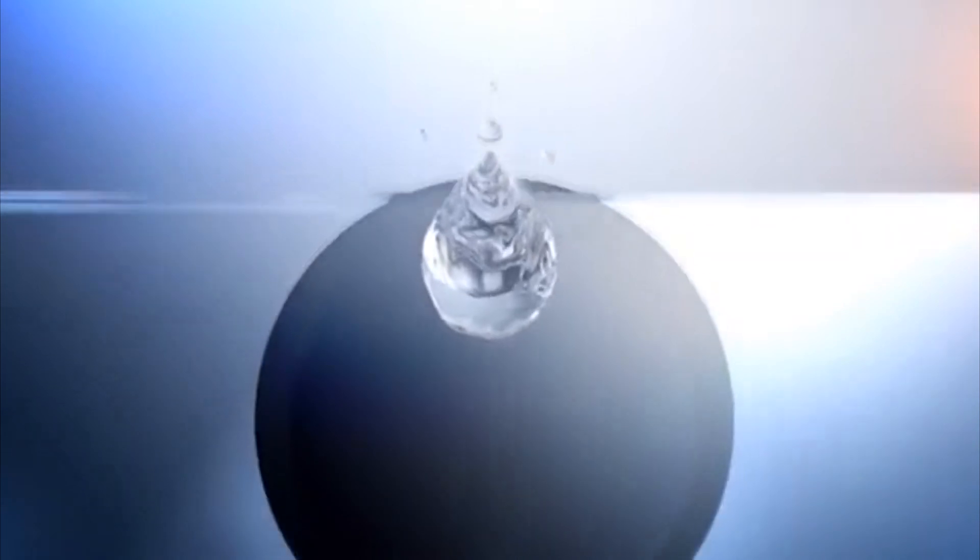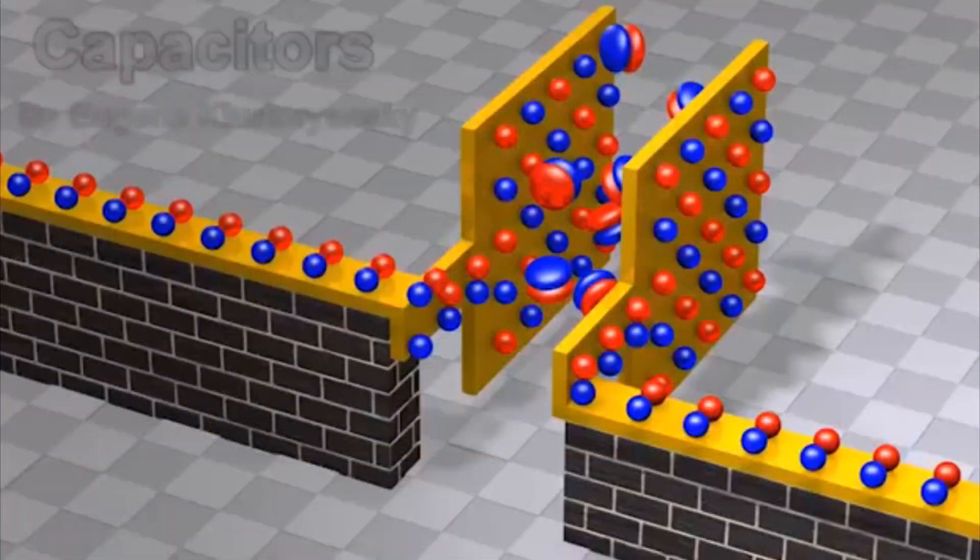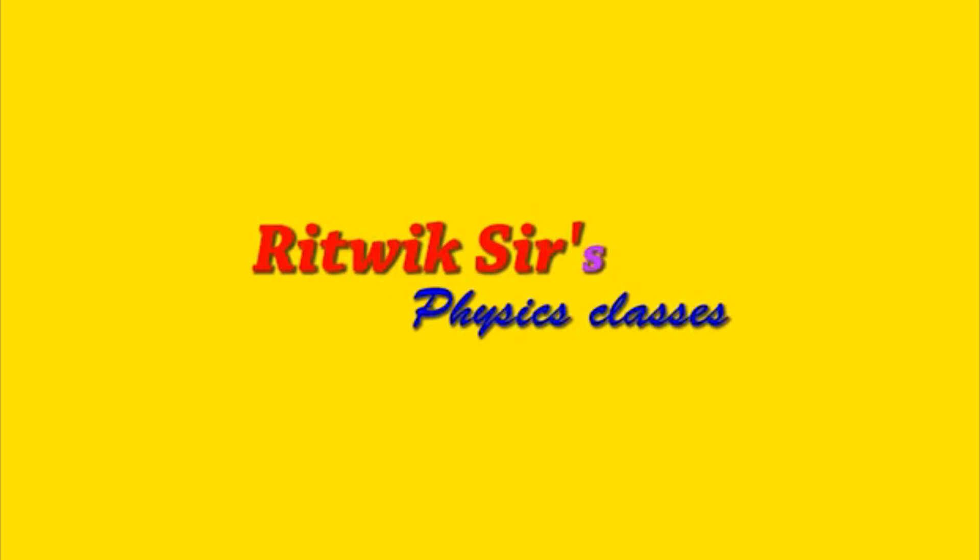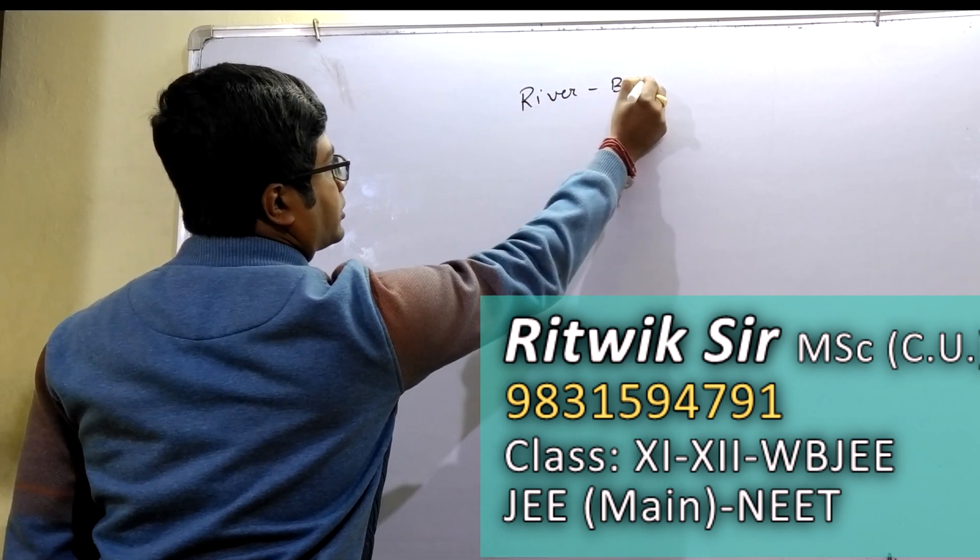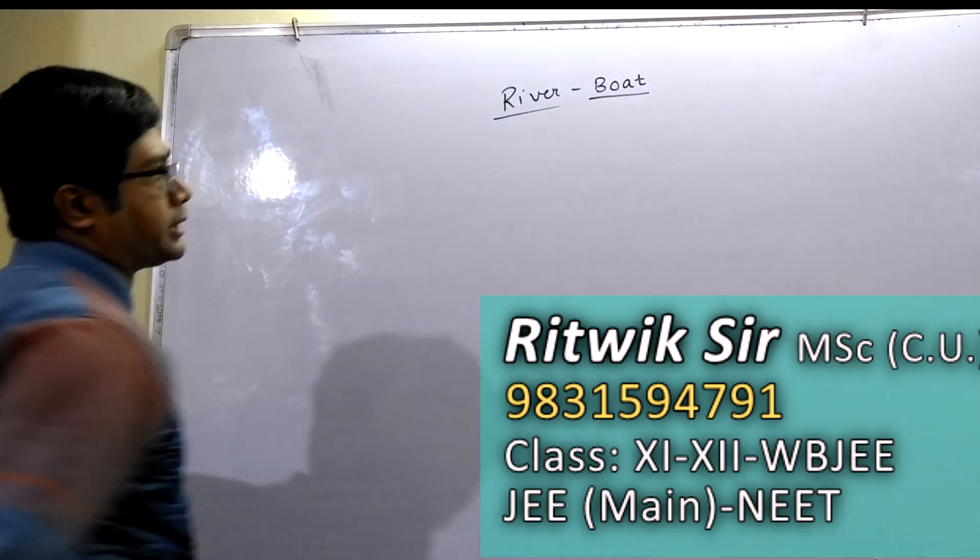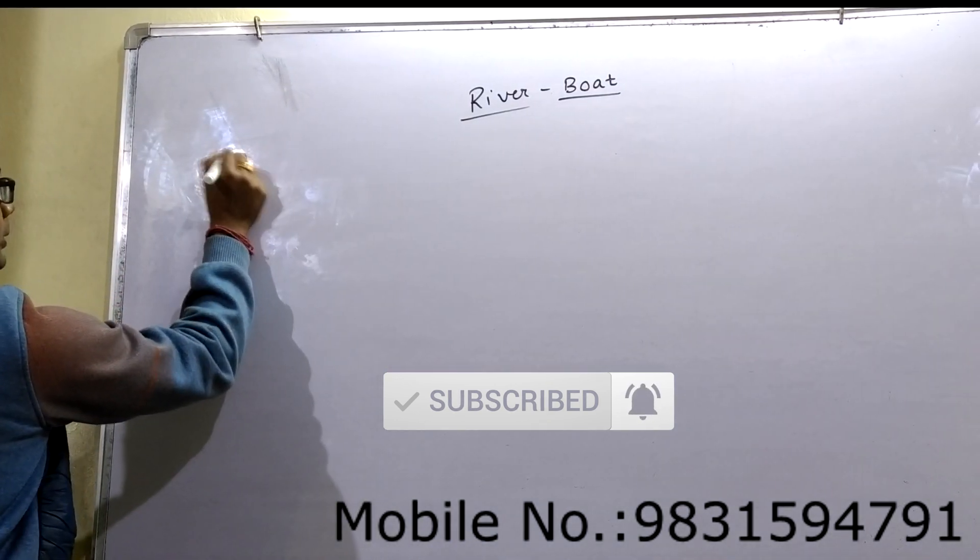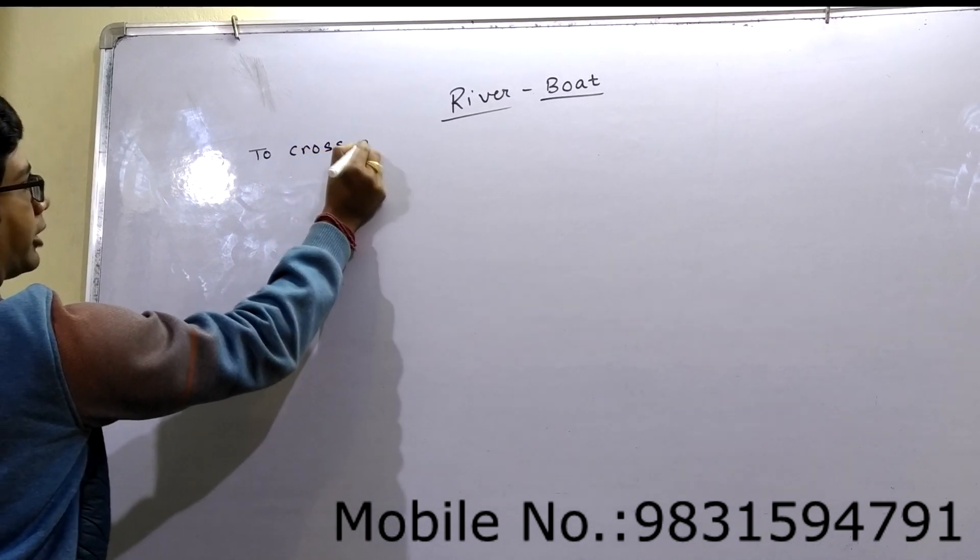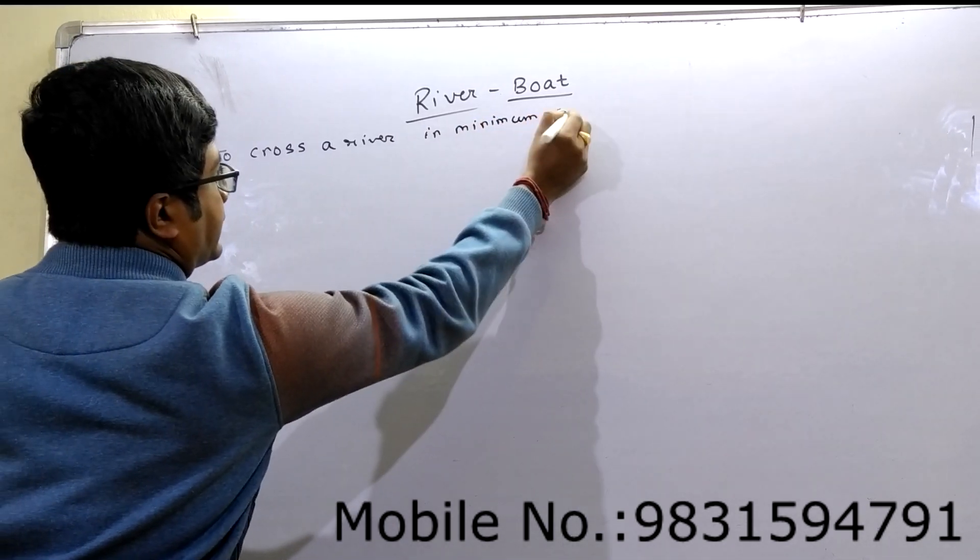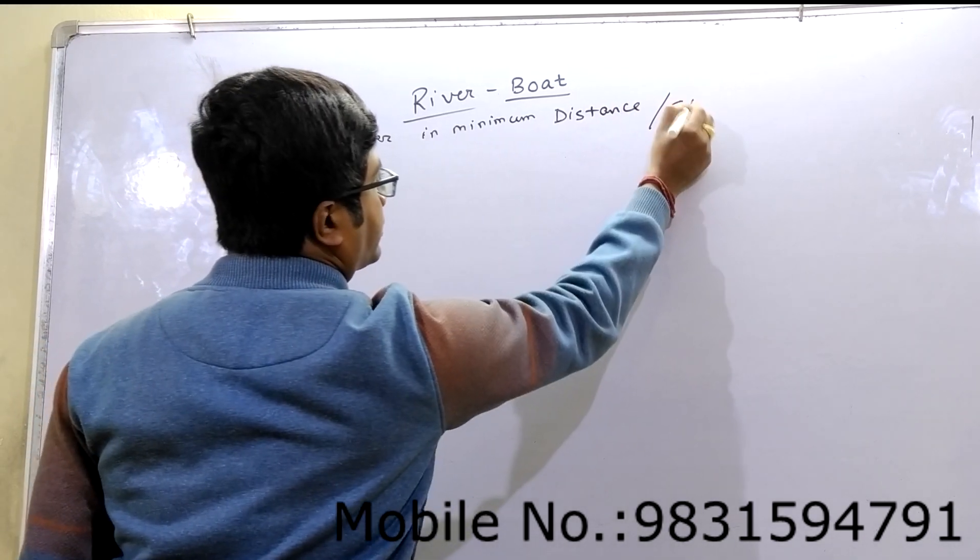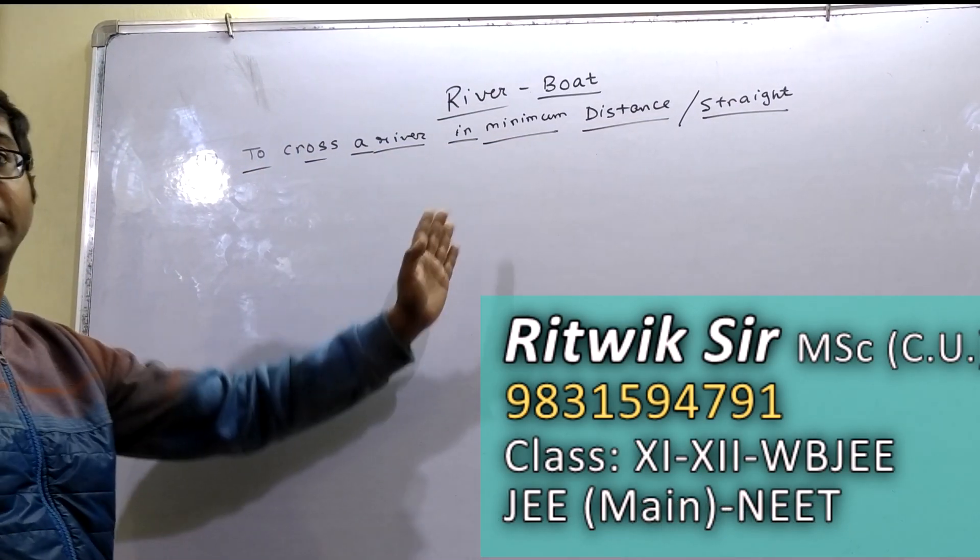Hello everyone. In 11th standard, in the 10th chapter, a very important topic is the river-boat problem. There are two topics: Number one, to cross a river in minimum distance or straight cross. And second topic, to cross a river in minimum time.